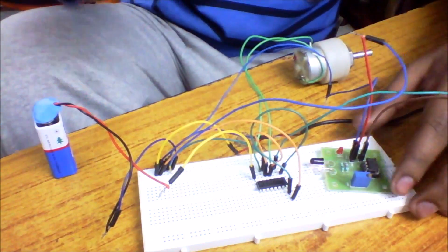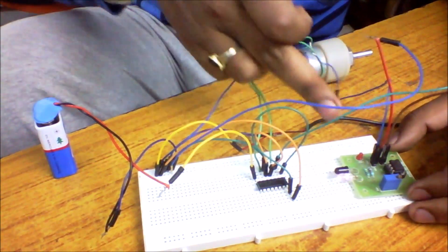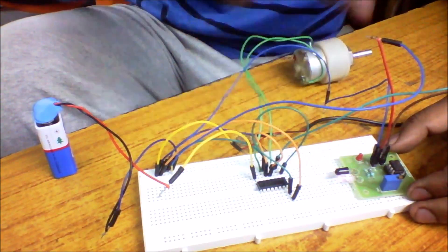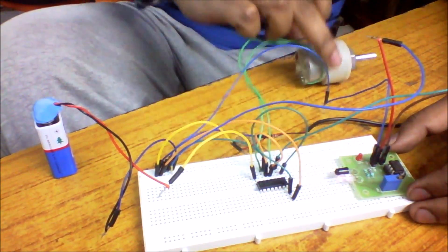All right, now it's ready. You can see when you give a signal - when an object comes in front of this IR sensor - it will glow and the motor will start to rotate. You can see the motor has started to rotate.